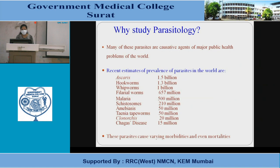Why is this important? Because many parasites are causative agents of major public health problems of the world. Recent estimates of prevalence show that hookworms, whipworms, filarial worms, malaria, schistosomes, amoebiasis, taenia, and Chagas disease affect millions and millions of people. These parasites cause varying morbidities and even mortalities.